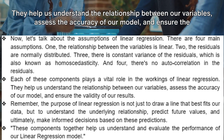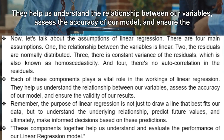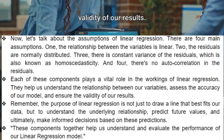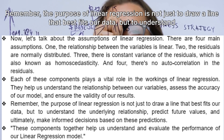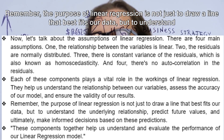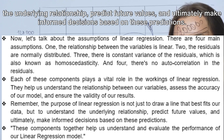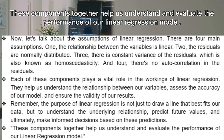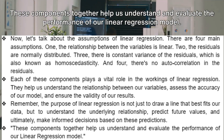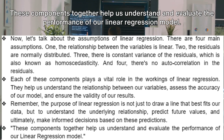Each of these components plays a vital role in linear regression. They help us understand the relationship between our variables, assess the accuracy of our model, and ensure the validity of our results. The purpose of linear regression is not just to draw a best-fit line, but to understand the underlying relationship, predict future values, and ultimately make informed decisions. These components together help us understand and evaluate our model's performance.